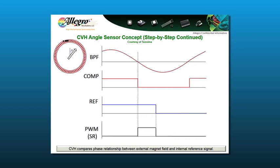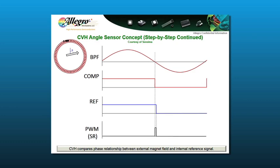The phase difference between these two signals' falling edges represents the angle measurement of the target magnetic field suspended over the IC.